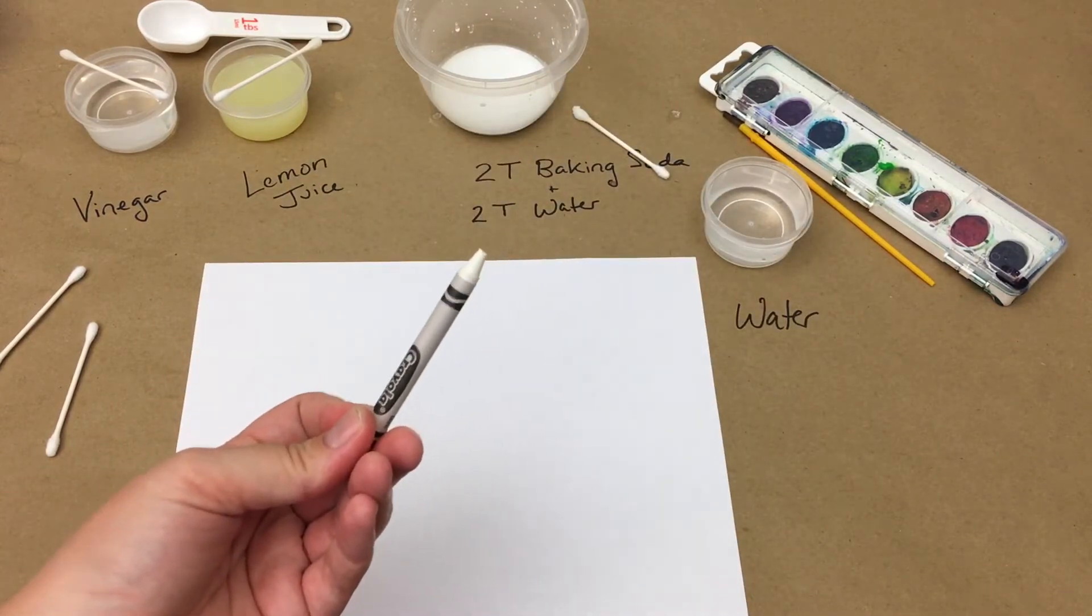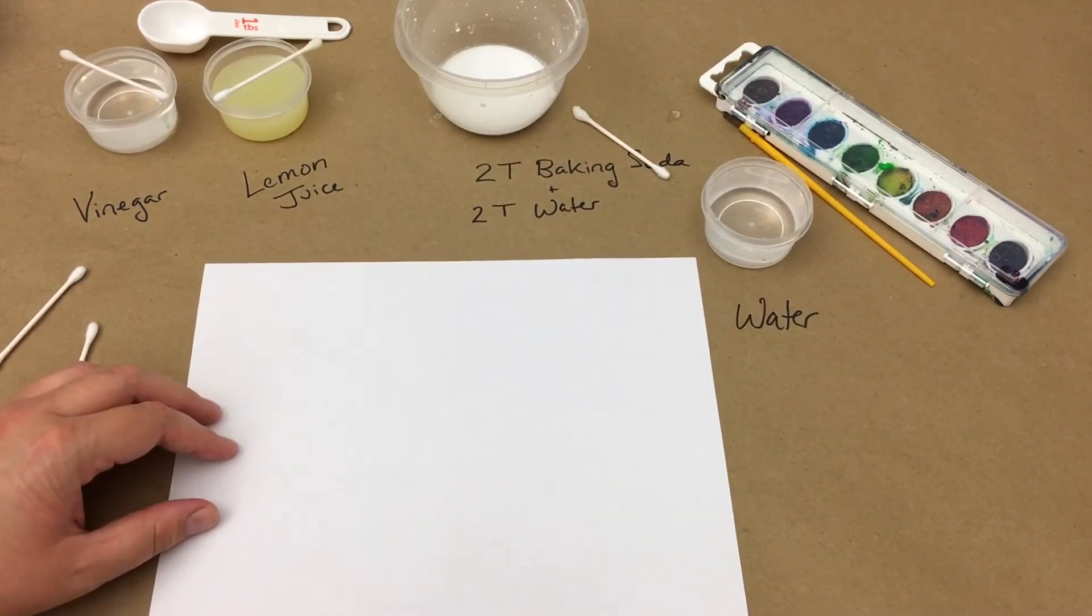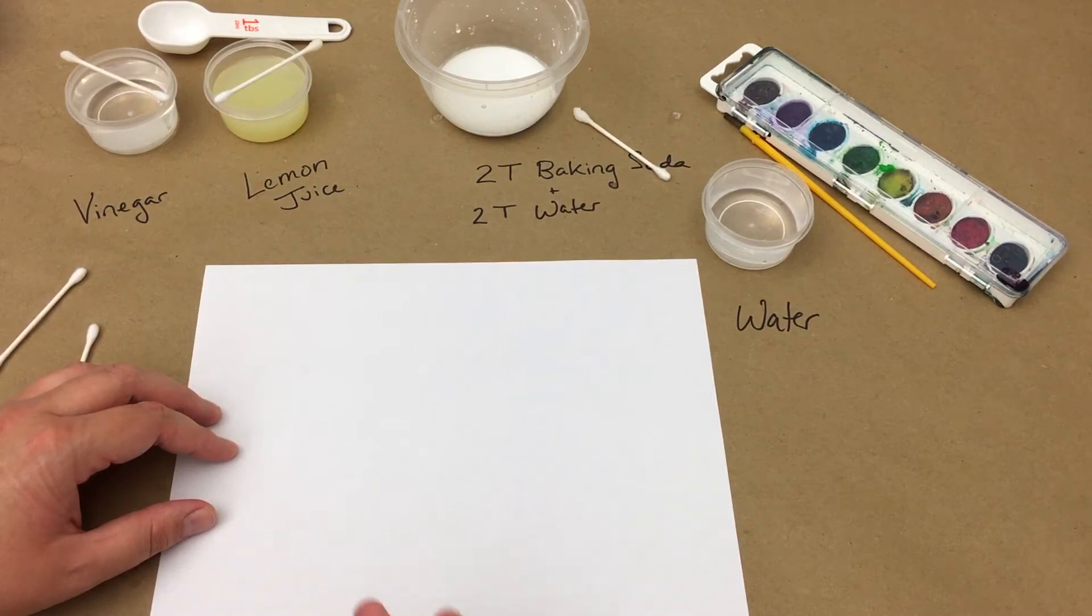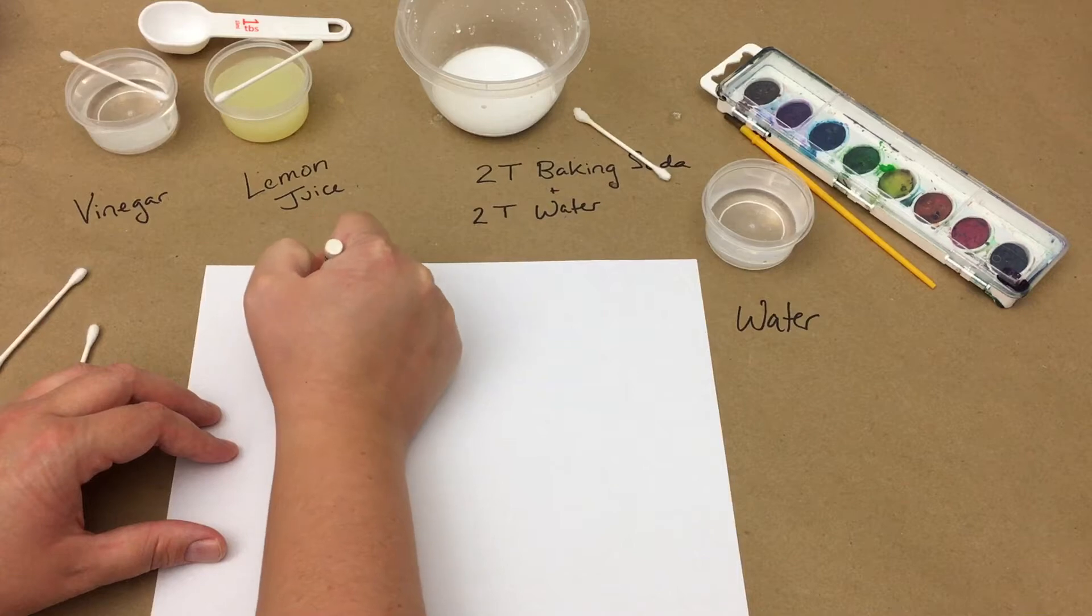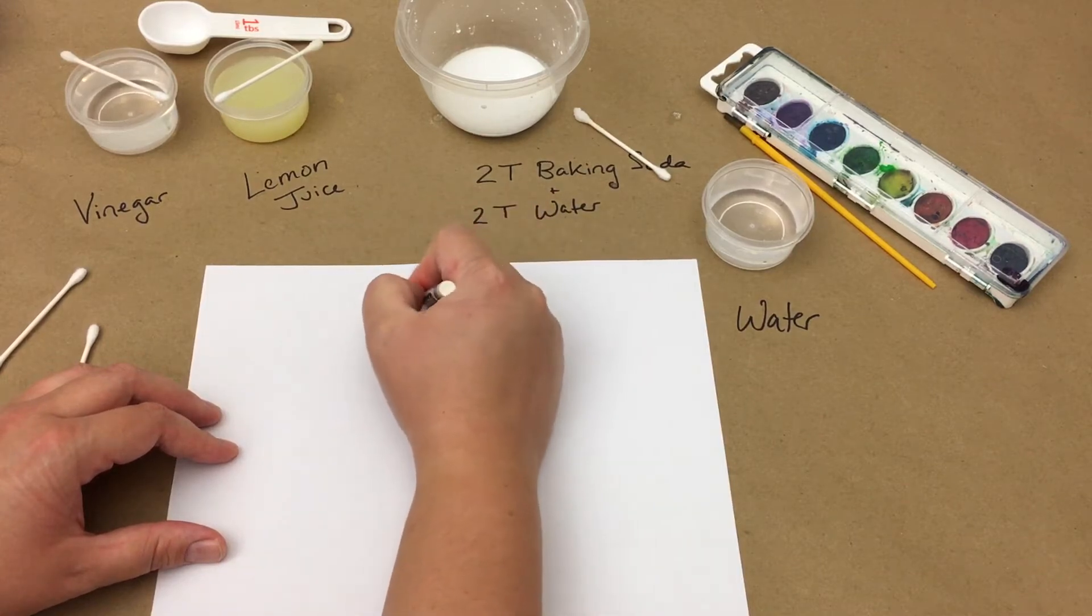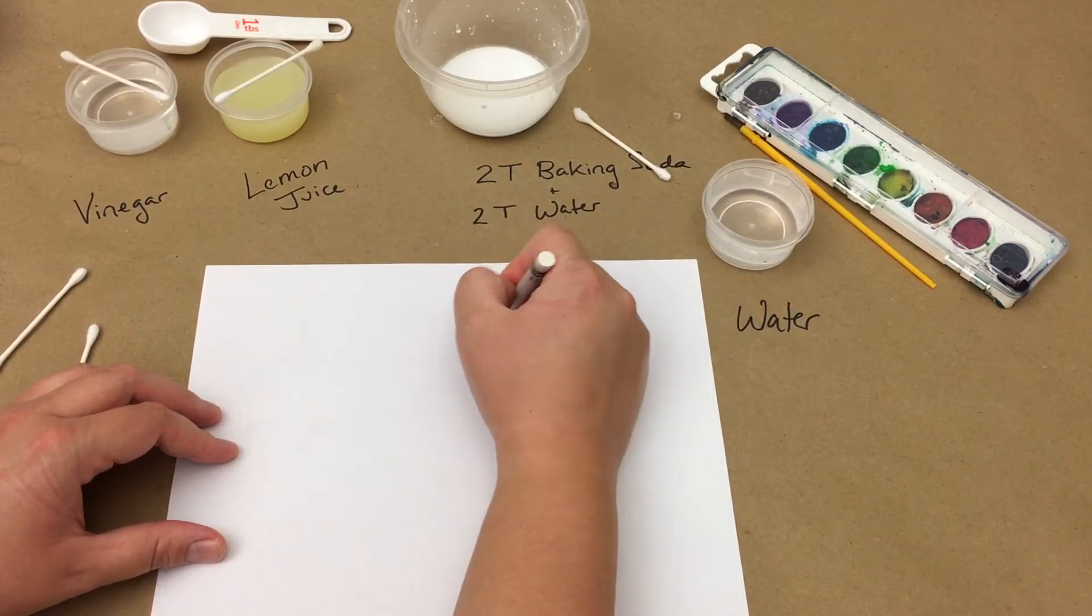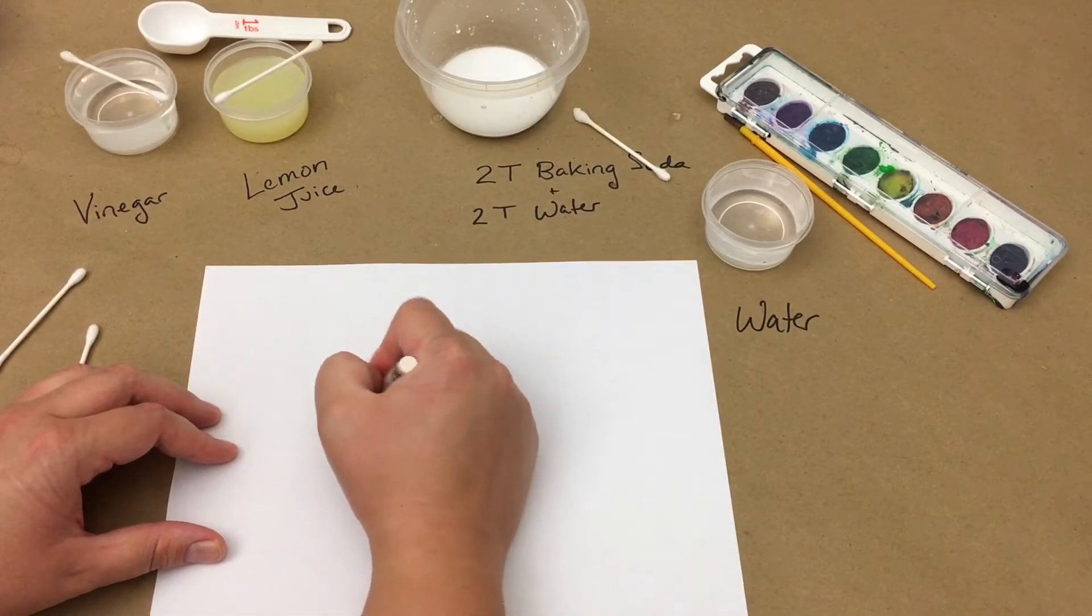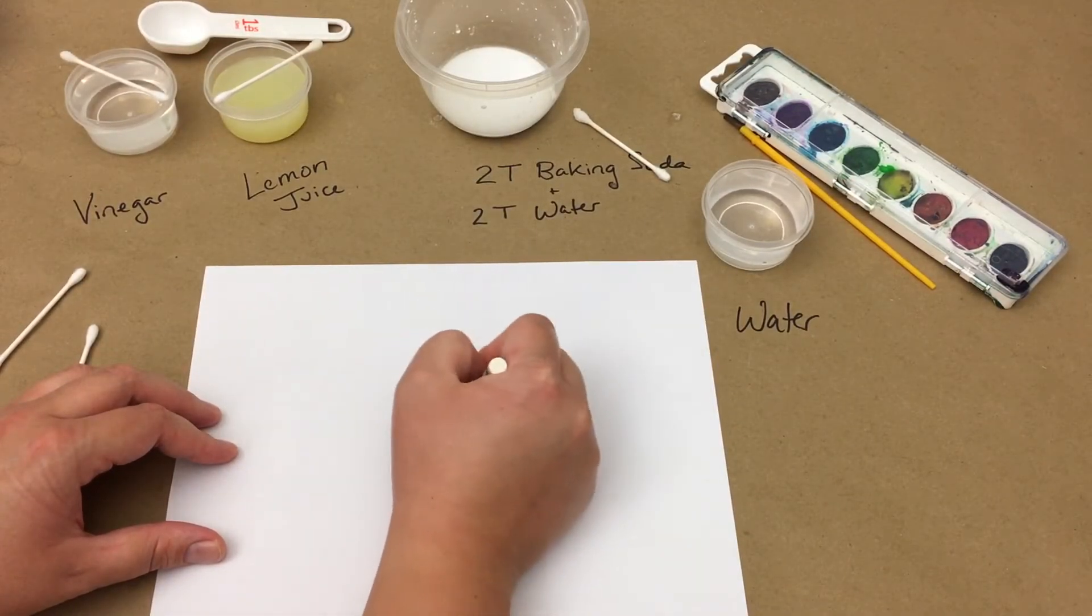Next we're going to write a message using a white crayon and a plain piece of white paper. You can also use a clear crayon if you have one left from a different project. Because of the fact that we're just writing on the paper and it's white on white, it will be very difficult to see your message as you're writing it. So you want to make sure to leave enough room between words and between lines so that you don't overwrite something you've already written.